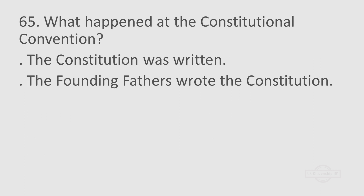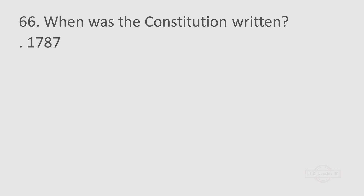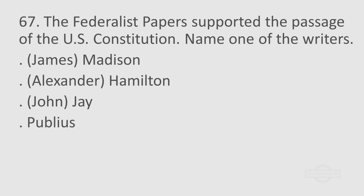Question 65: What happened at the Constitutional Convention? The Constitution was written. The Founding Fathers wrote the Constitution. Question 66: When was the Constitution written? 1787. Question 67: The Federalist Papers supported the passage of the U.S. Constitution. Name one of the writers. James Madison. Alexander Hamilton. John Jay. Publius.